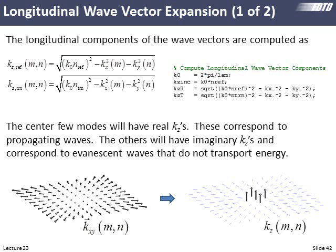To phase match, we use the dispersion relation to calculate the Z component of the wave vector — the square root of the magnitude of the full wave vector squared minus the transverse component squared. This difference can be real or imaginary. If the longitudinal components are purely real, that's a propagating plane wave that we count as reflected or transmitted power. If purely imaginary, it's evanescent and we ignore it. Typically only the lowest order few are real and propagating — most will always be evanescent. Evanescent fields don't contribute to power flow except in the tunneling situation, so we only account for the propagating ones.